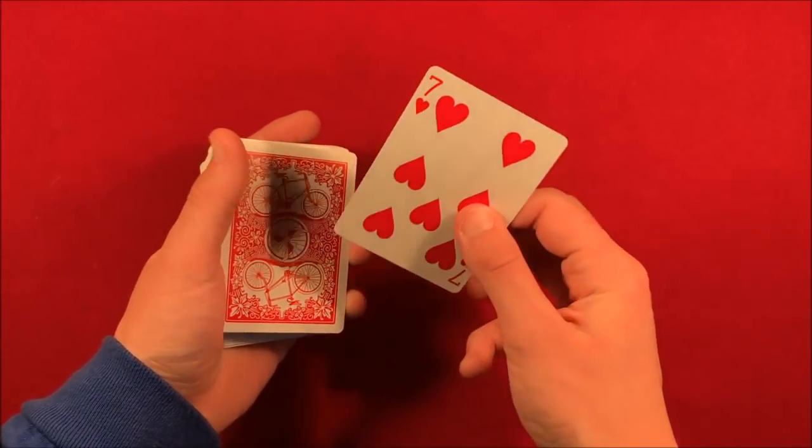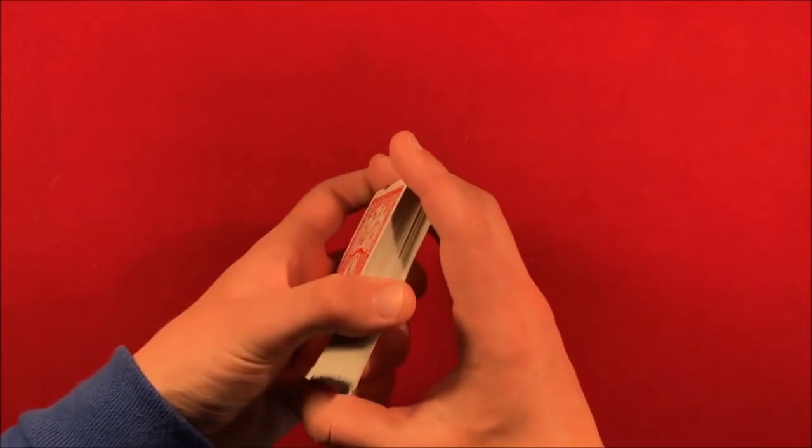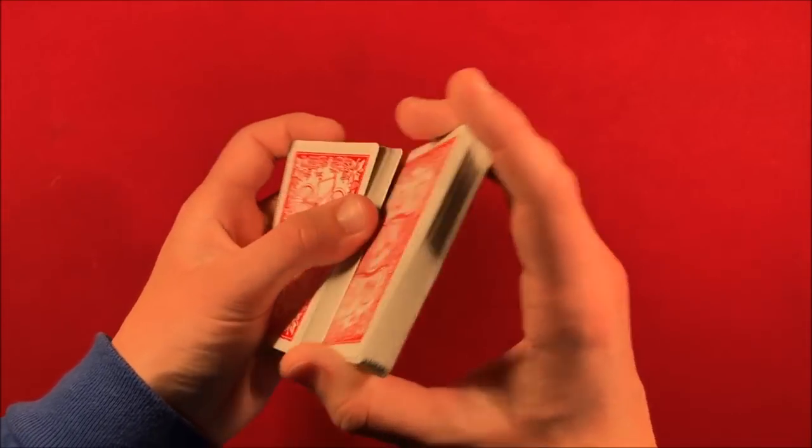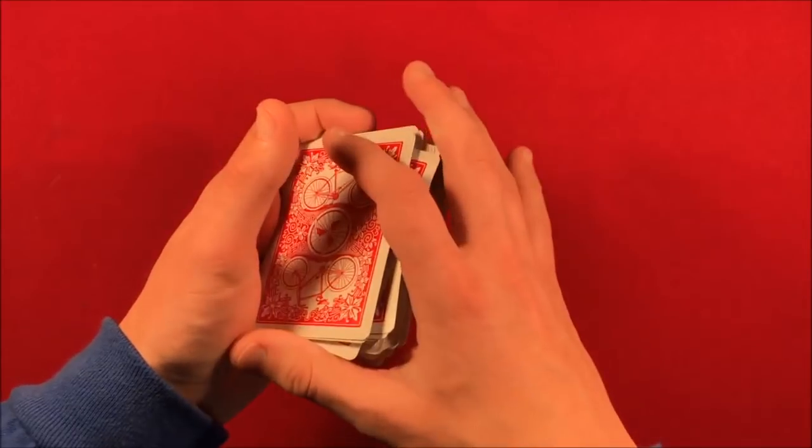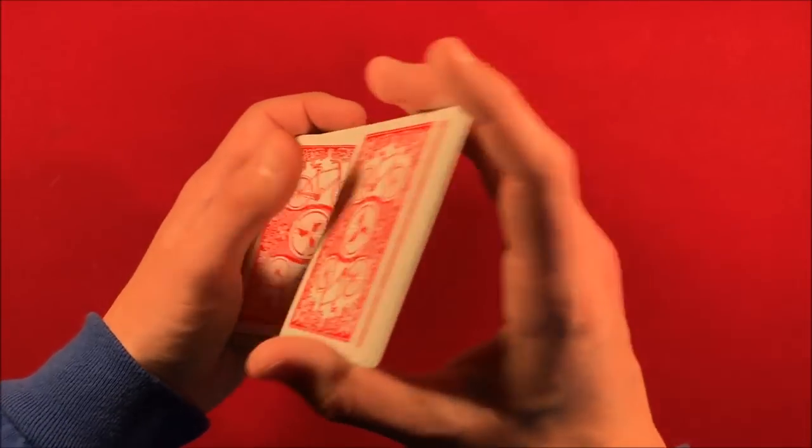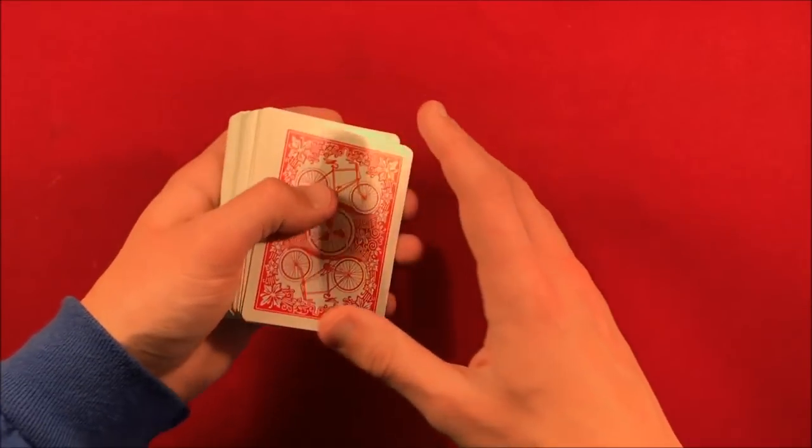He does a double lift. The card is actually on top. Then what he does is he says he can mix up the deck some more. He pulls the first card down, bringing that card to the bottom, continuing the shuffle. Since that card's on the bottom, he overhand shuffles the cards until that card is back on top.